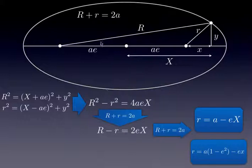Now using the fact that our sum is two times a, we can divide the equation by this equation and then immediately we get another simple relation between the difference between the radii and the projection on the x-axis.